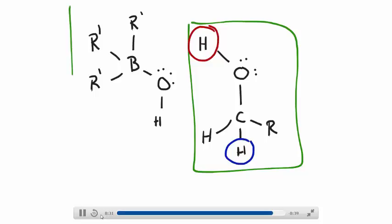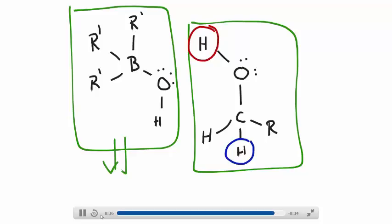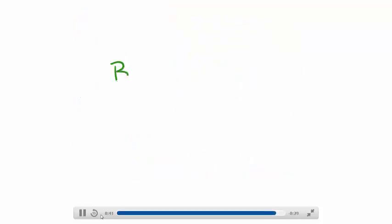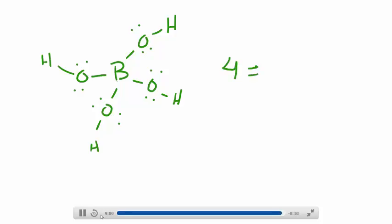This remaining complex here, the boron complex, will go through this process three more times. So that in the end, we have a total of four of these alcohols that we're interested in. That is the equivalence ratio.